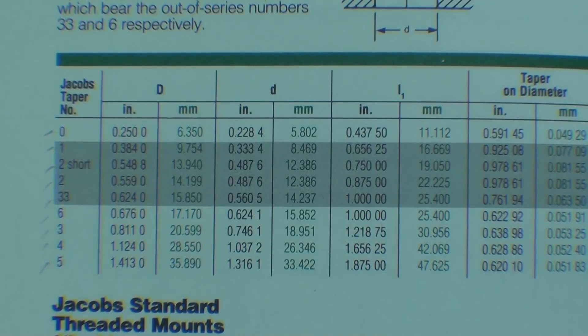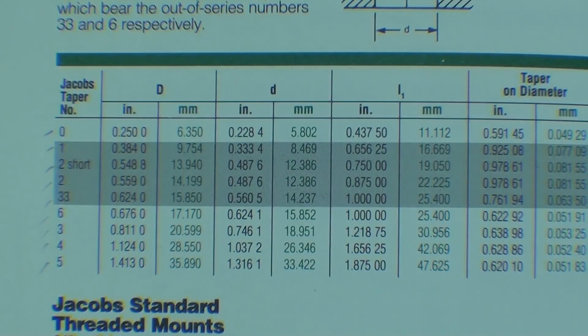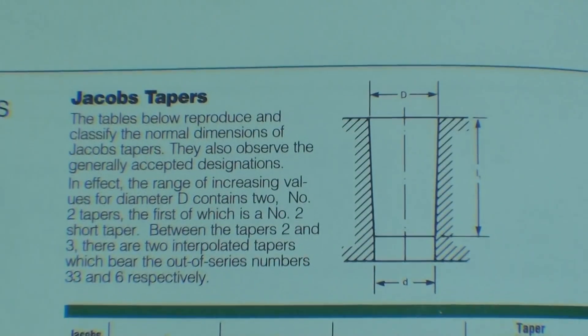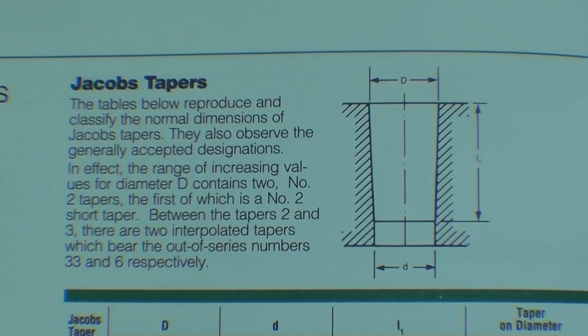This is a 20-year-old Jacobs catalog, but in this chart here, you can see the different Jacobs taper numbers, and there are nine of them, and it gives all the dimensions on those if anyone is interested in that, and that is in relationship to the little picture that they have up here: diameter, length, and so on.